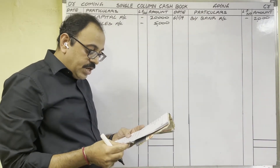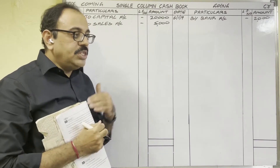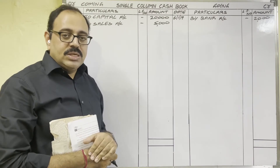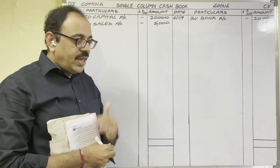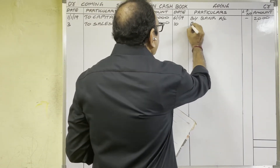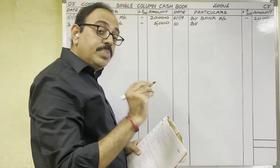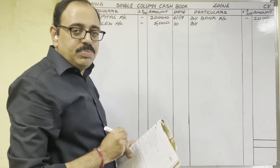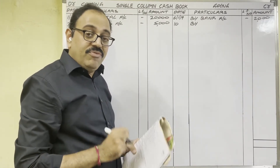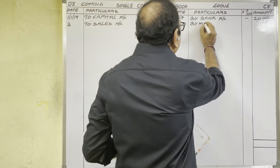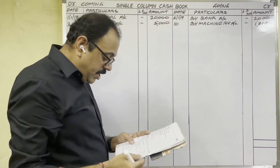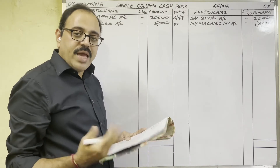10th January: purchased machinery 1,800 rupees. The firm purchased machinery and the seller's name is not given, so this is a cash purchase. Machinery is coming to us, cash is going from us — credit side. If goods are purchased write 'By Purchases Account'; if a fixed asset is purchased, write that asset name. So write: 'By Machinery Account', 1,800 rupees.